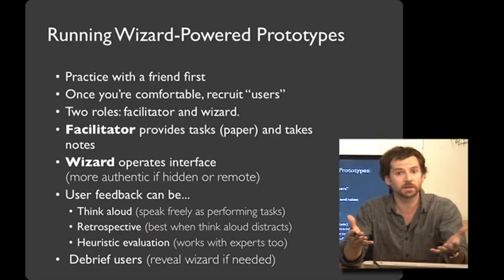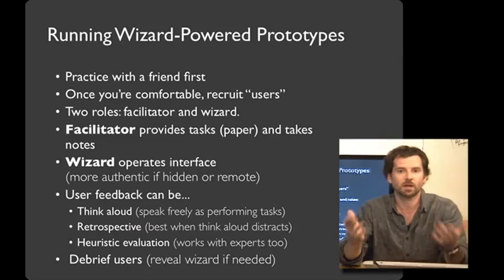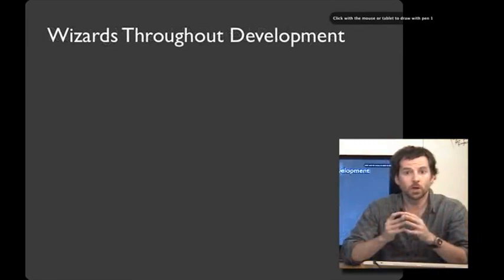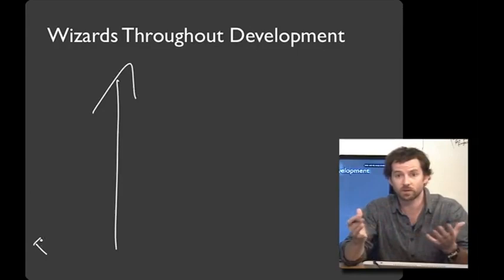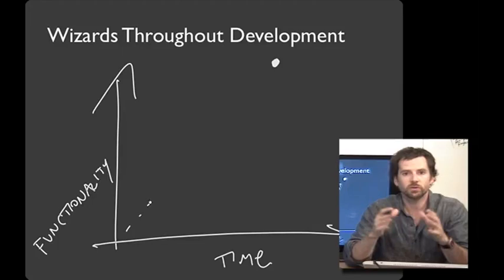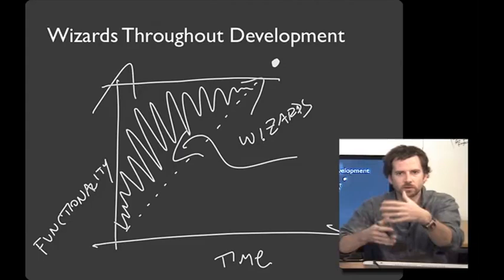Once you're all done, make sure to thank people for their time. You may want to give them a gift certificate, ice cream, or some other kind of thank you. And if you haven't yet told them that there's actually a wizard behind the scenes operating the user interface, the end of the experiment is a really good time to do that — make sure to be honest with people. You can use wizards throughout the entire development of your software, not just at the very beginning. As you move toward fully functional software, you can use wizards to fill in the gap of whatever's not built yet, having the wizard do all the interaction early on and then filling in only the parts that aren't done as you get closer to a final product.